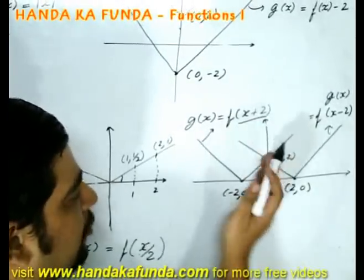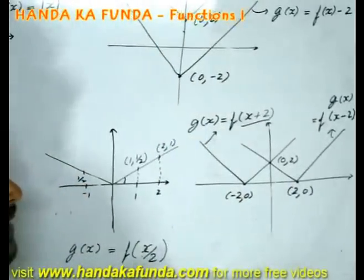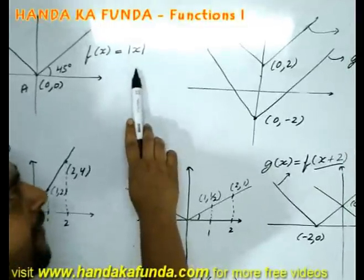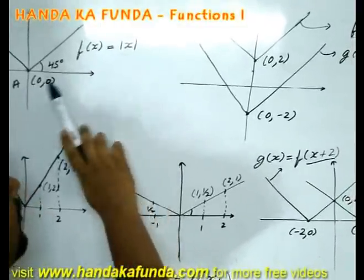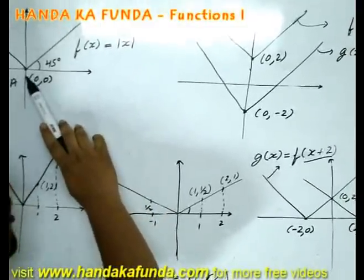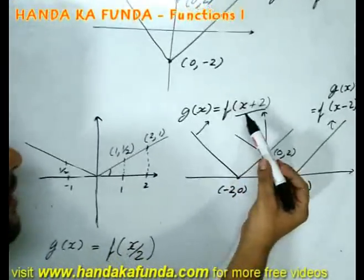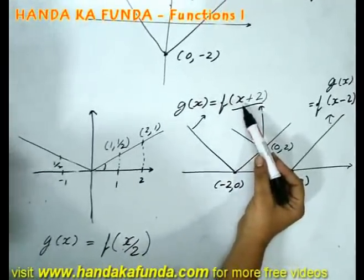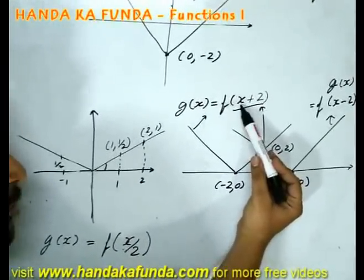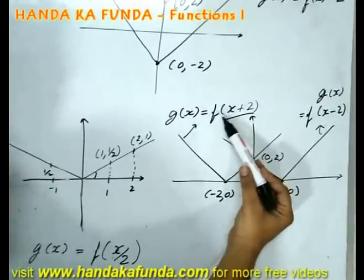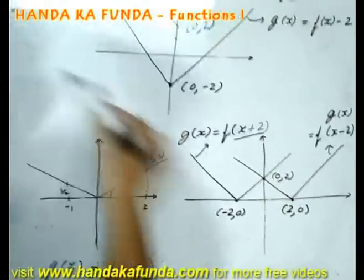How will it shift? When I am adding plus 2, it will shift to the left-hand side. Why so? If the value of x is 0, then mod of 0 is 0, and that's how I obtain the point A. But what will happen in this case? What should I put in the place of x such that I get the result as 0? This should be minus 2. Only then I will get mod of 0 as 0.